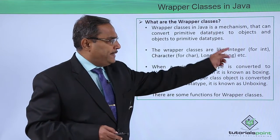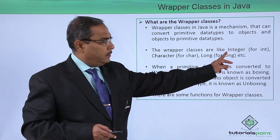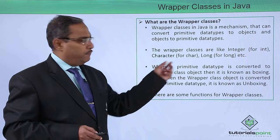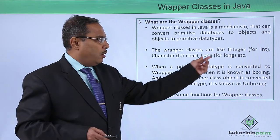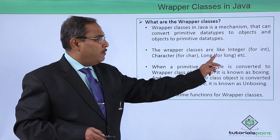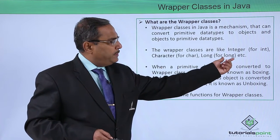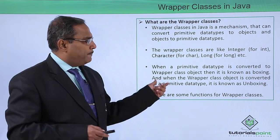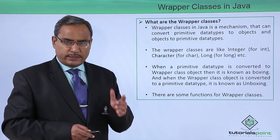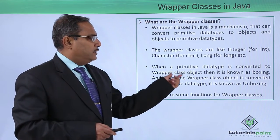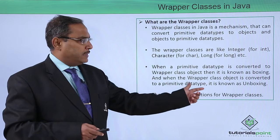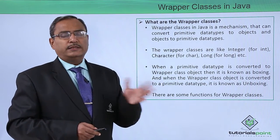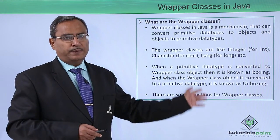The wrapper classes are like Integer — note the 'I' is capital for int, which is a primitive data type — Character with capital 'C' for char, Long with capital 'L' for long, where the lowercase 'l' is the primitive data type, and so on. When a primitive data type is converted to a wrapper class object, it is known as boxing. When a wrapper class object is converted to a primitive data type, it is known as unboxing. These two terms are very important and related to wrapper class operations.